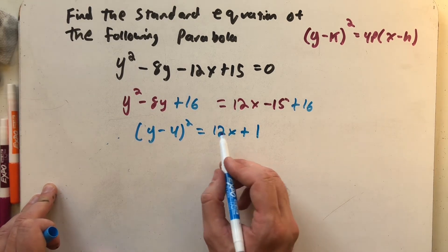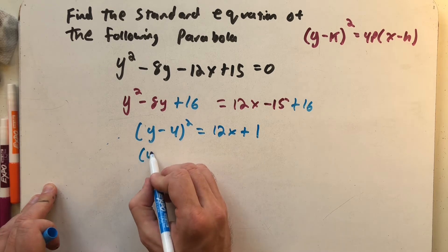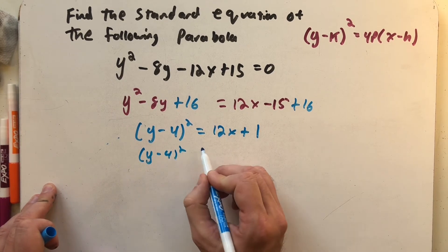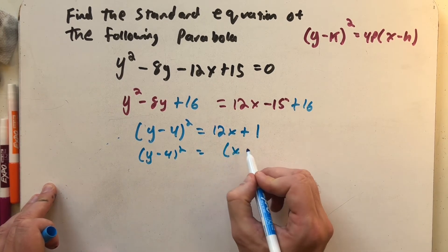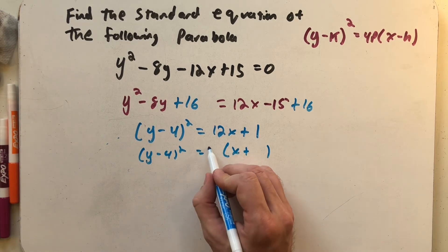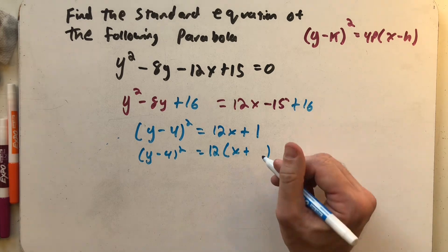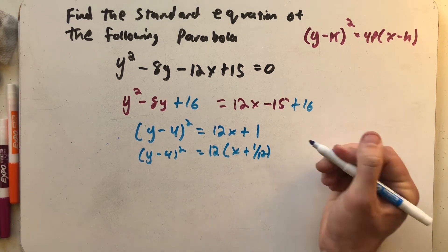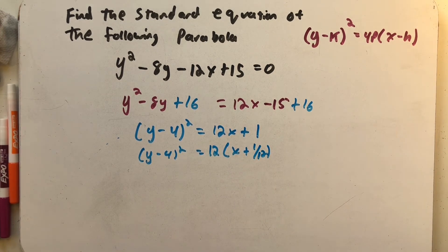Alright, so let's see what happens now. I need to rewrite that side: (y - 4)². And I need this to be an x, either plus or minus something. Here it's going to be a plus. And I have to factor out a 12. And when I do that, I end up with a 1/12 right there.